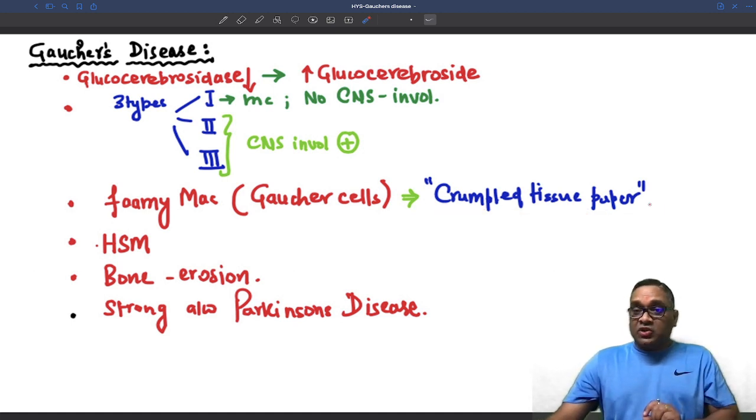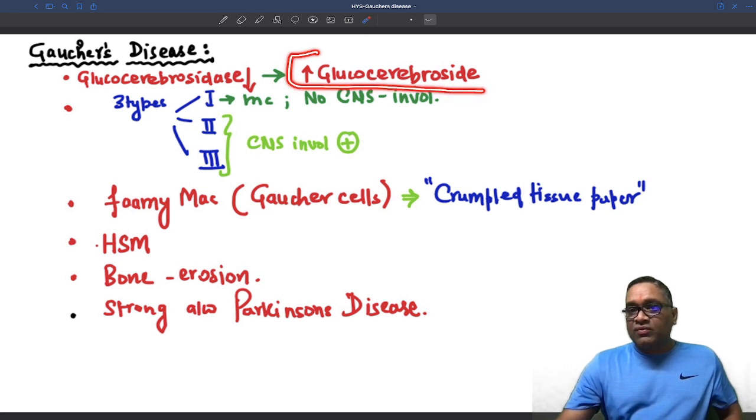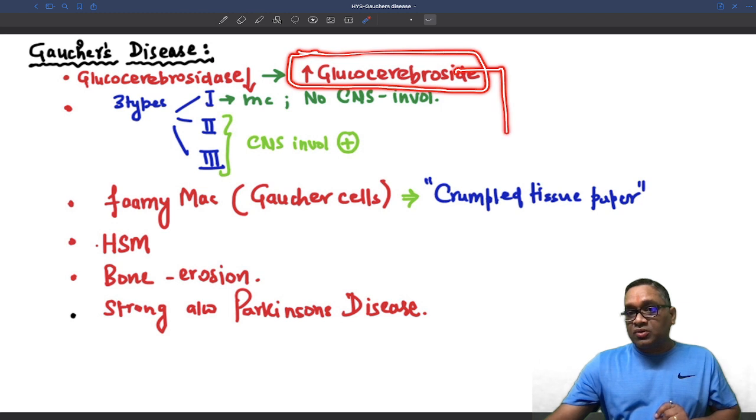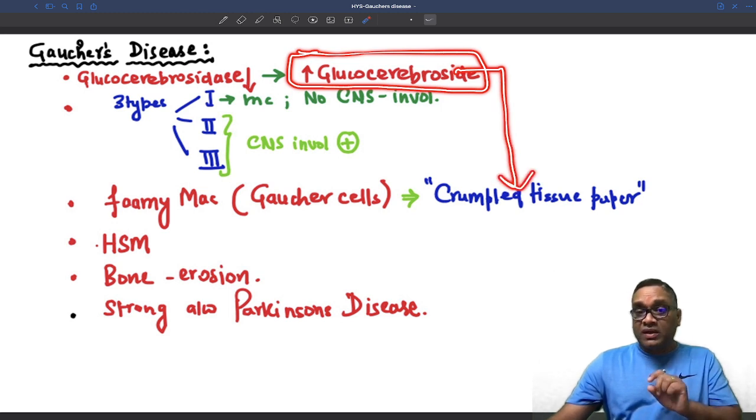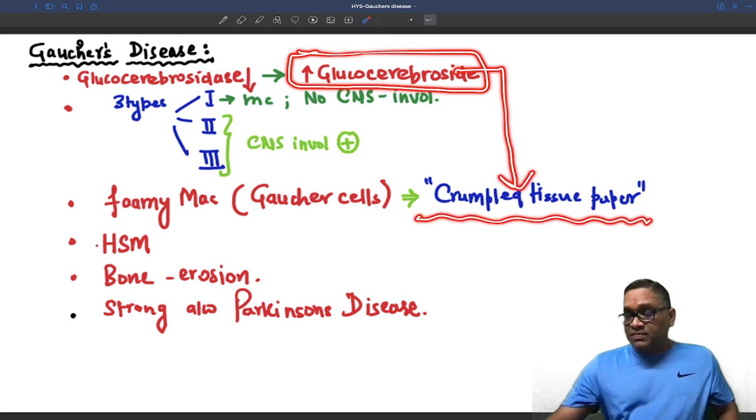Why is there a crumpled tissue paper pattern? Because of excessive accumulation of glucocerebroside. This excessive accumulation within the macrophages gives rise to the crumpled tissue paper pattern.